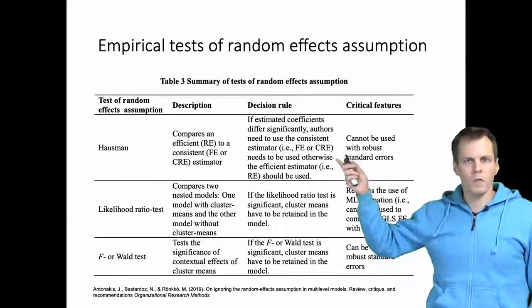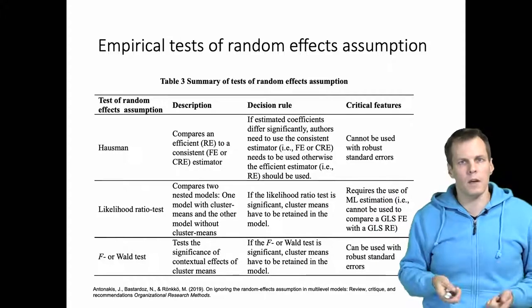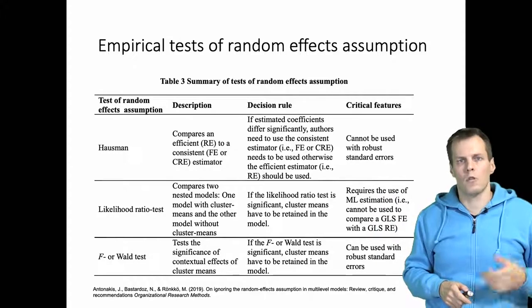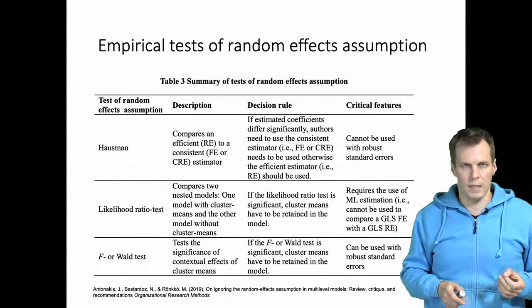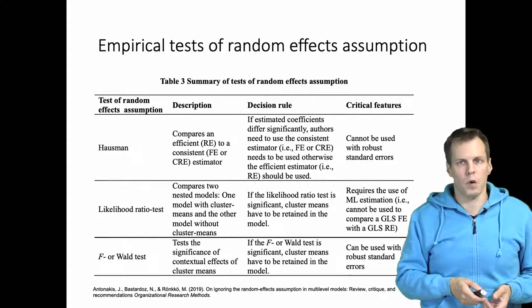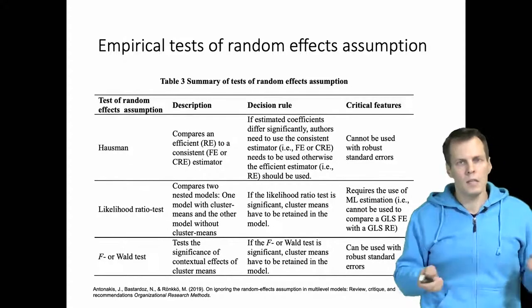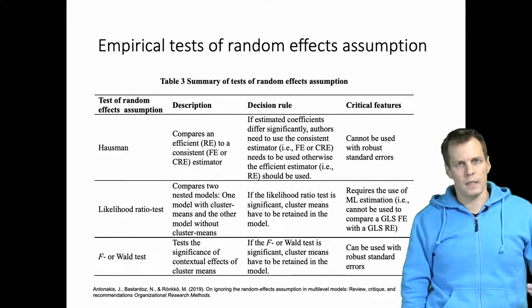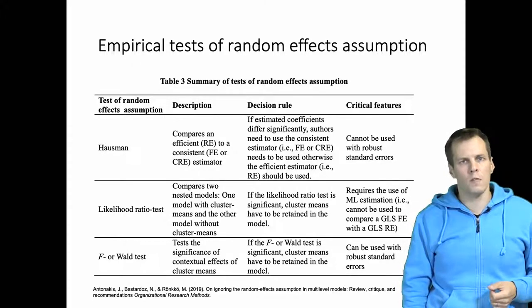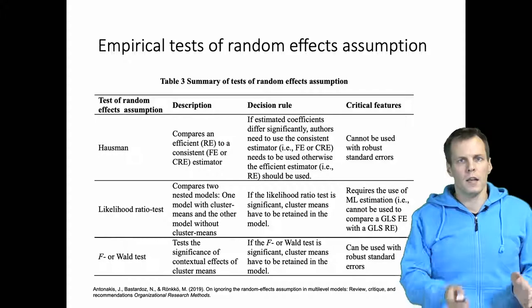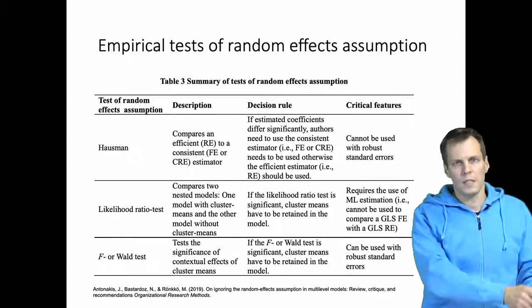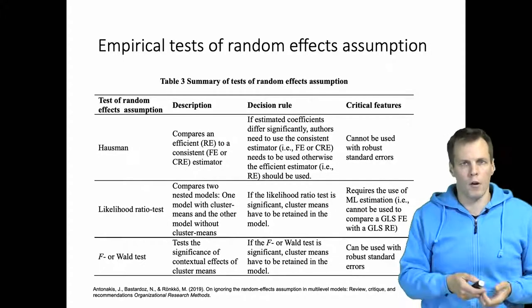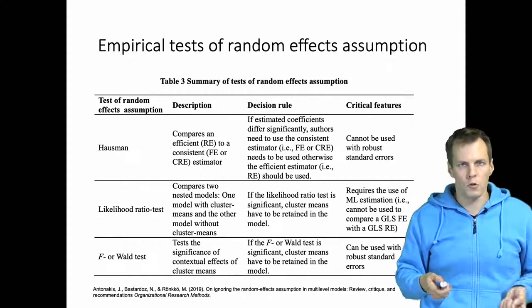The logic of the Hausman test is a bit different because it doesn't use the correlated random effects to estimate the contextual effects model. Instead, when you use the Hausman test, you first estimate the GLS fixed effects model, followed by the GLS random effects model, and then you compare those two estimates.